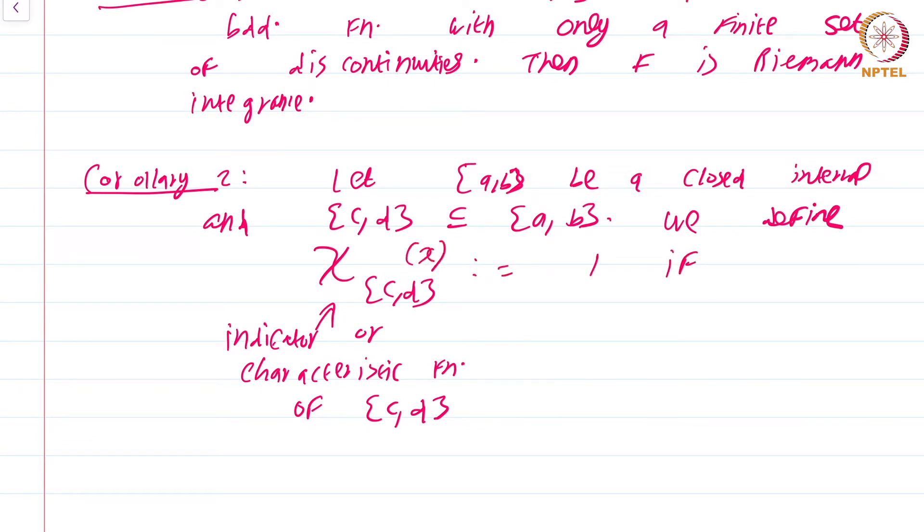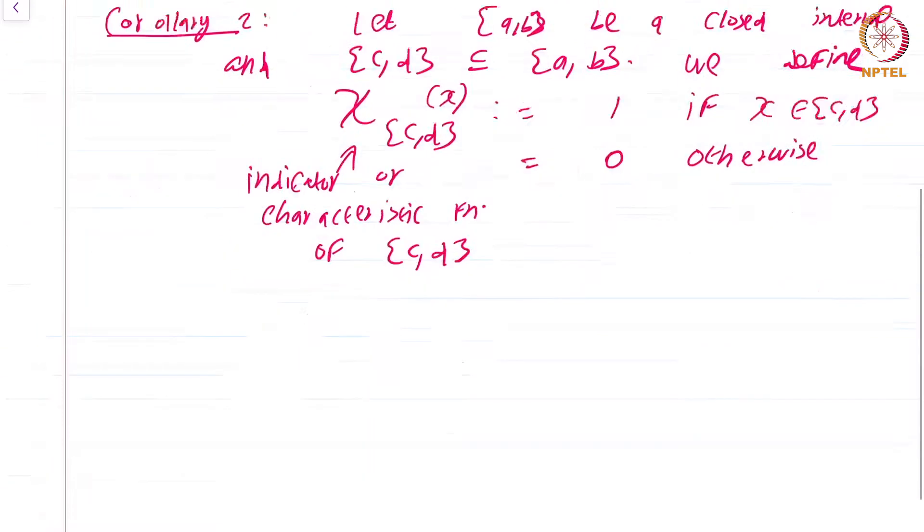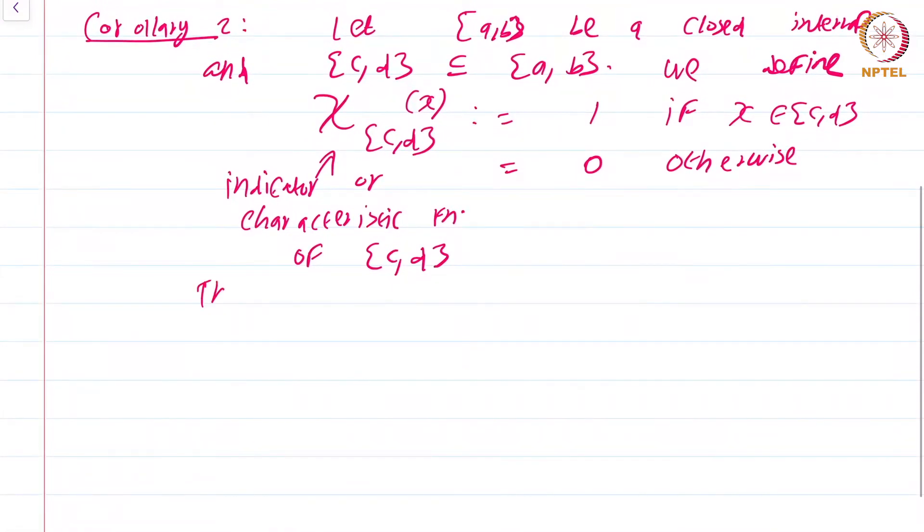This is by definition 1, let me put of x, if x is an element of the closed interval [c,d] and is 0 otherwise. So this is a function whose value is 1 precisely at the points of [c,d] and 0 elsewhere. Then chi_[c,d] is Riemann integrable.